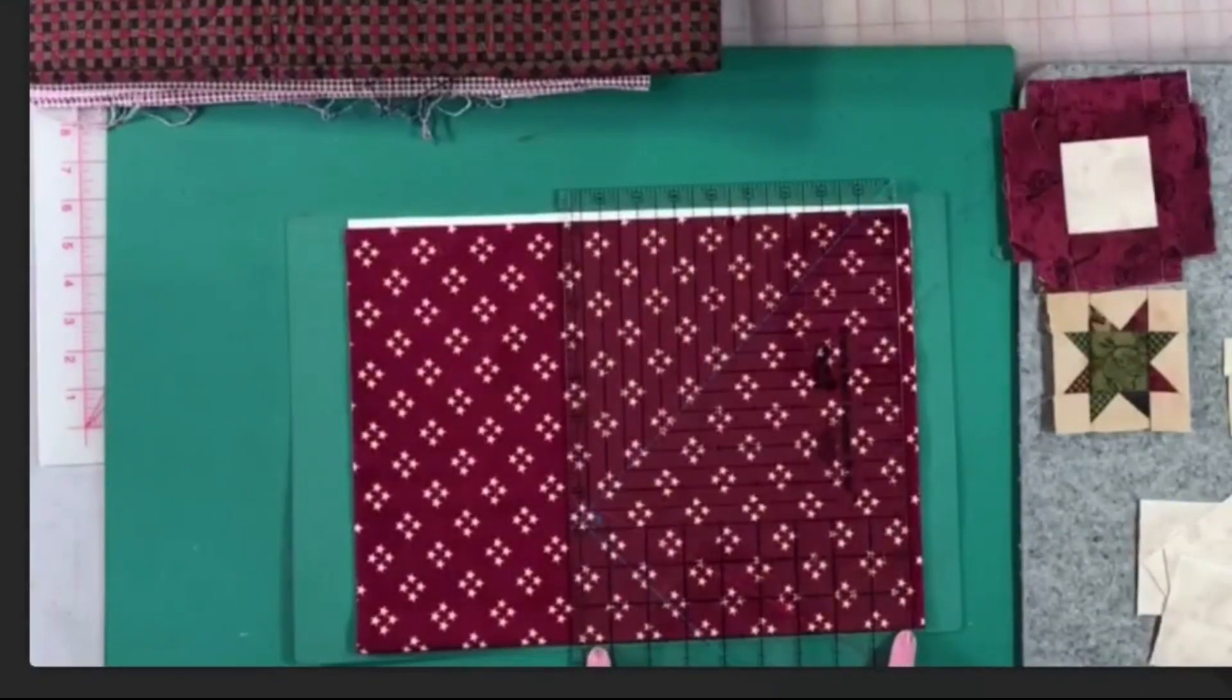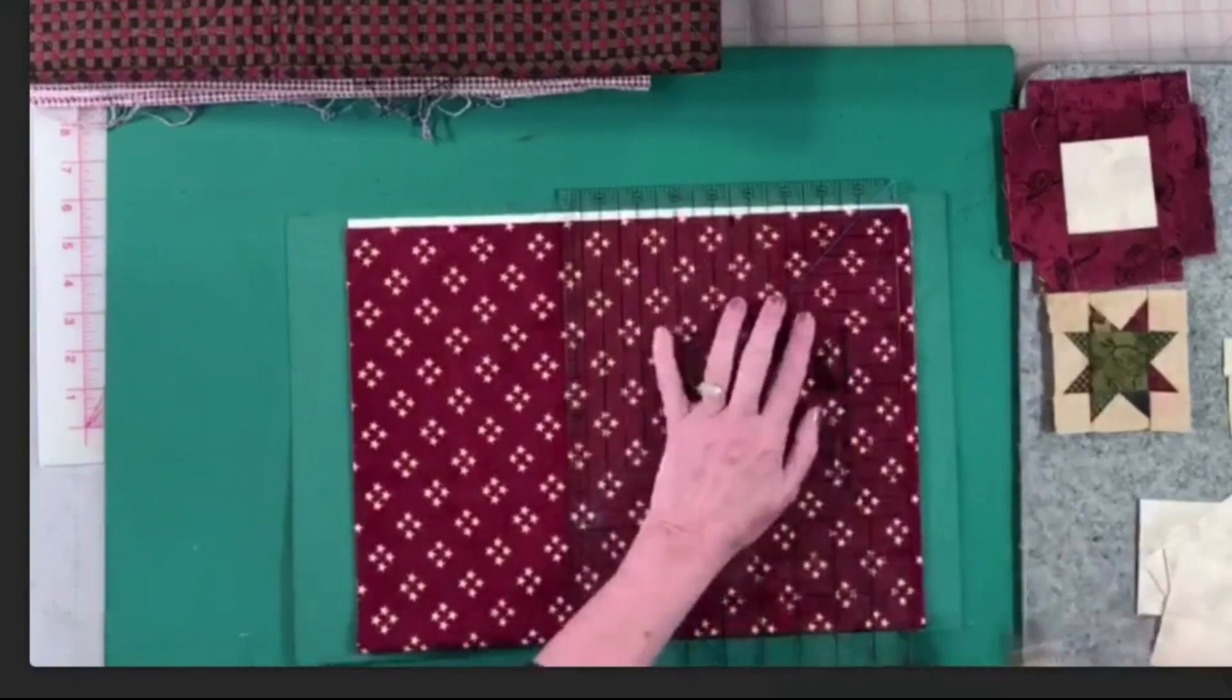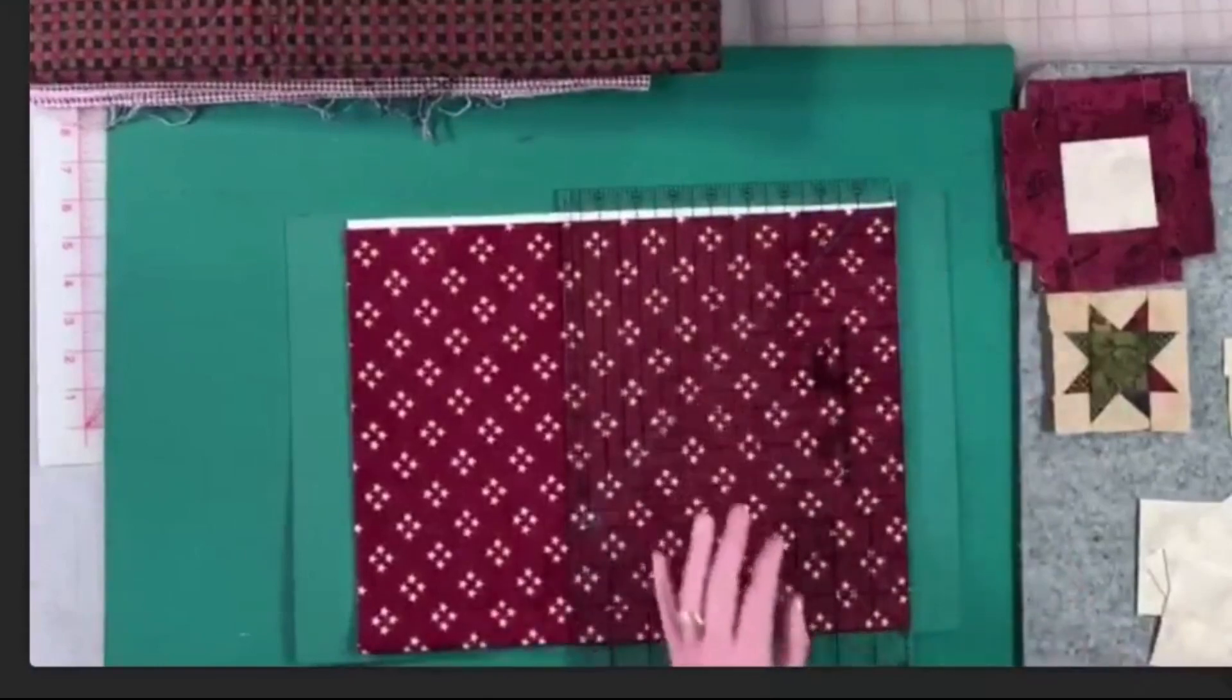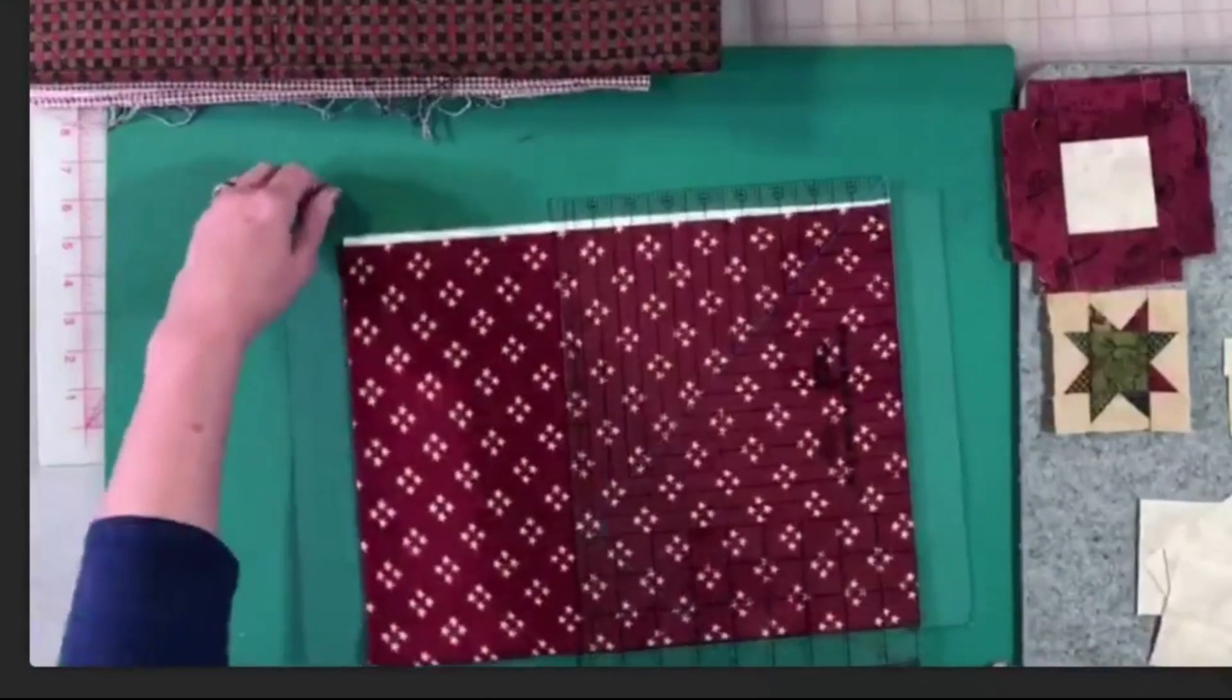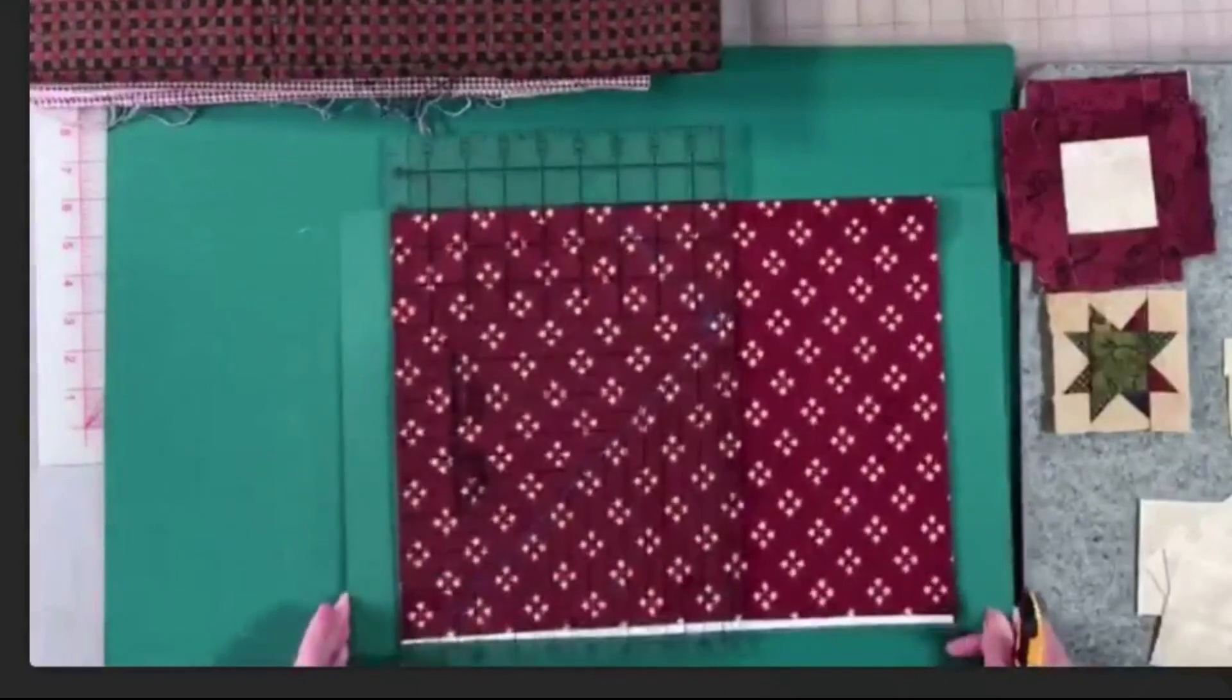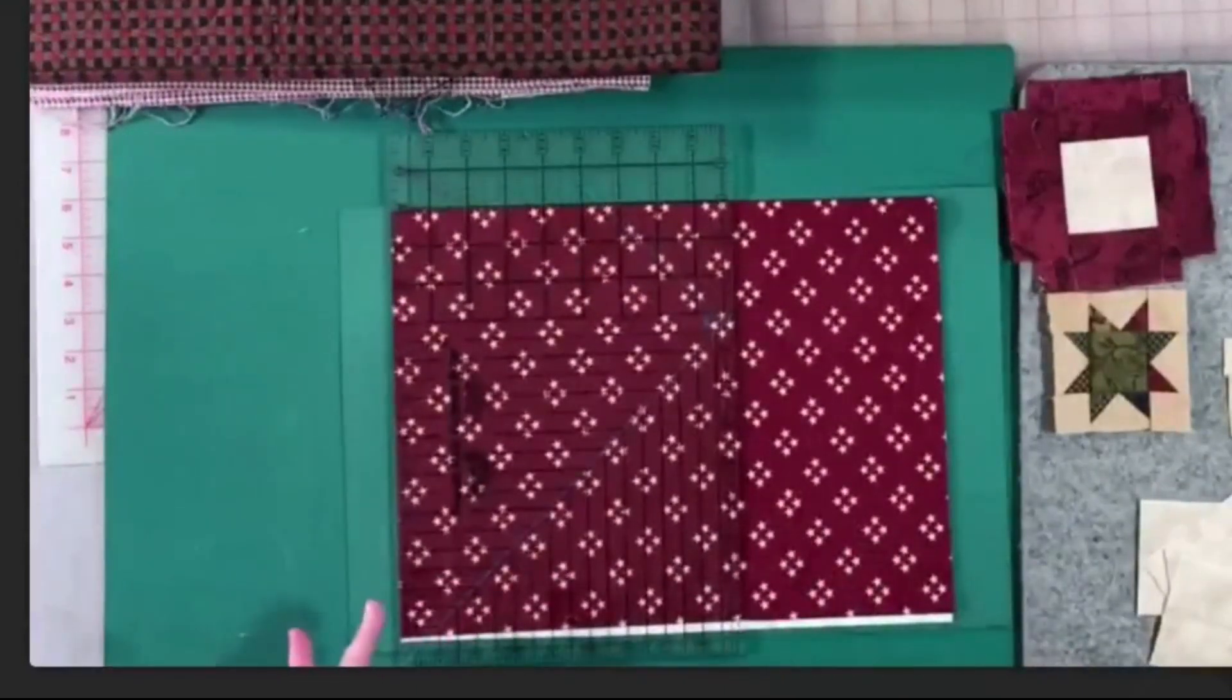And once again, I put the line, a line from my ruler along that fold to help keep it straight so that I don't have so much or any of a dog leg there. So, move your mat. And see, you don't have to worry about your rulers. Don't move your rulers. Once you have them on there, leave them on there.